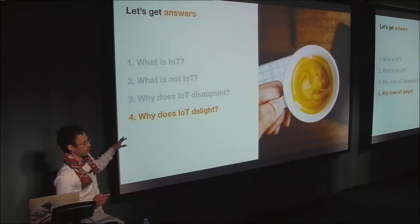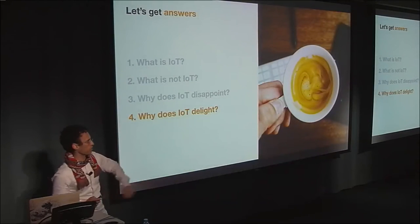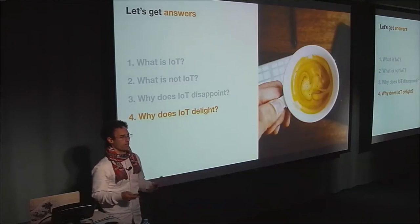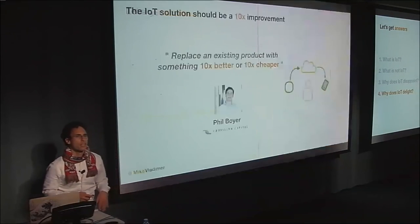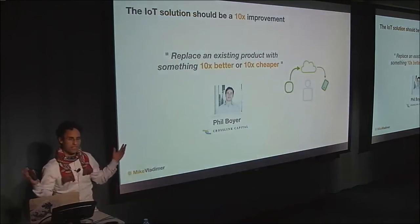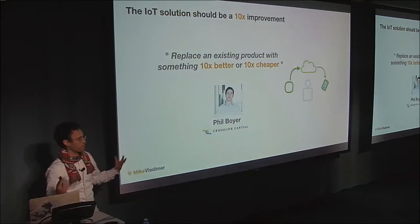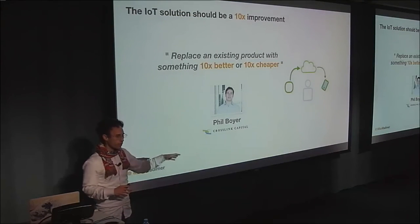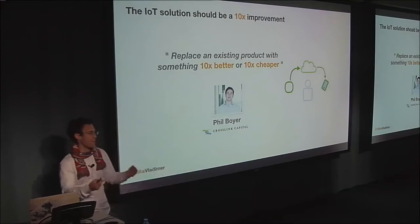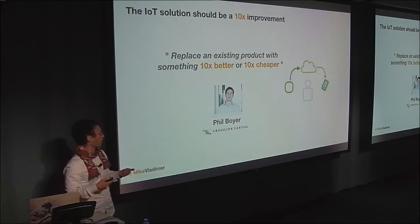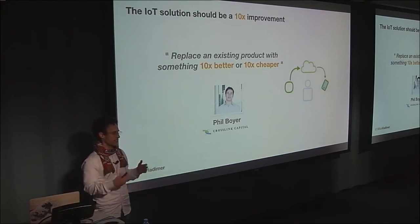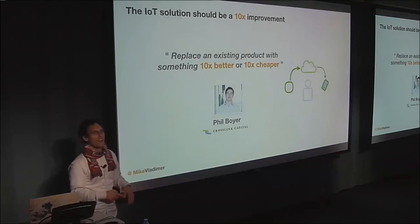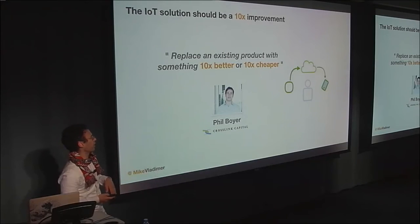Now that we've gotten through disappointment — and I promise the Jamboni is the bottom of the disappointment barrel — how do we get to delight? That's what we came here to talk about: delightful devices. It's not enough for me to say the IoT solution has to be an improvement over the status quo. It needs to be a 10x improvement. I took this from Phil Boyer from Crosslink Capital — it's either got to be 10x cheaper, 10x better, or ideally both.